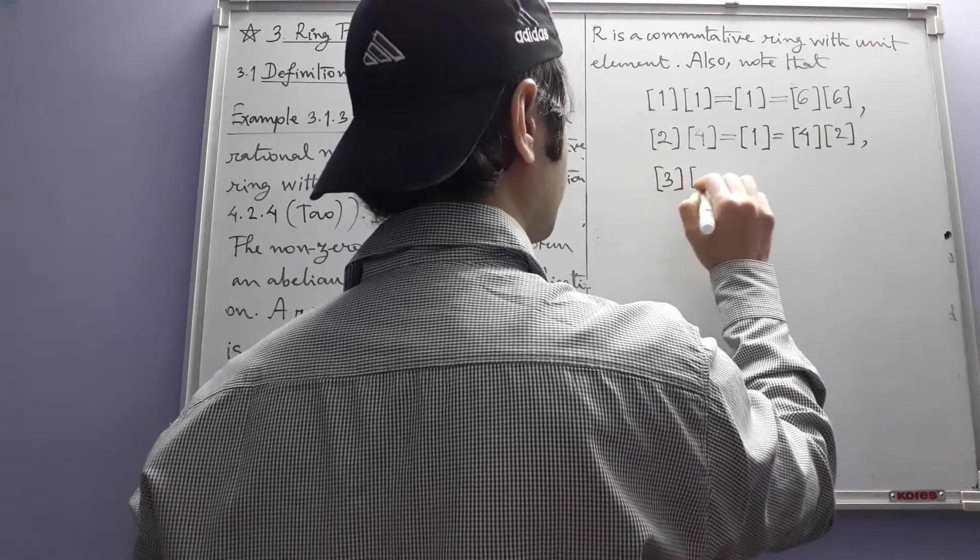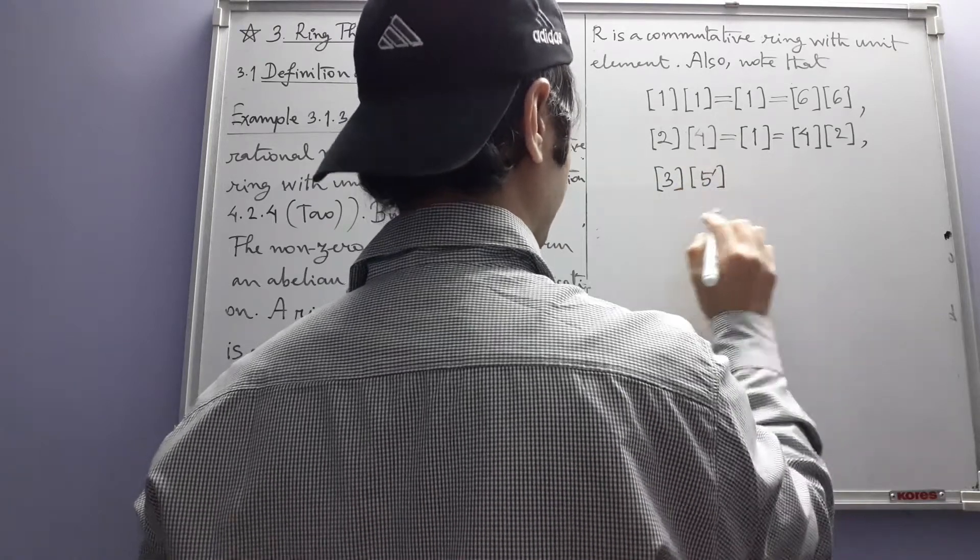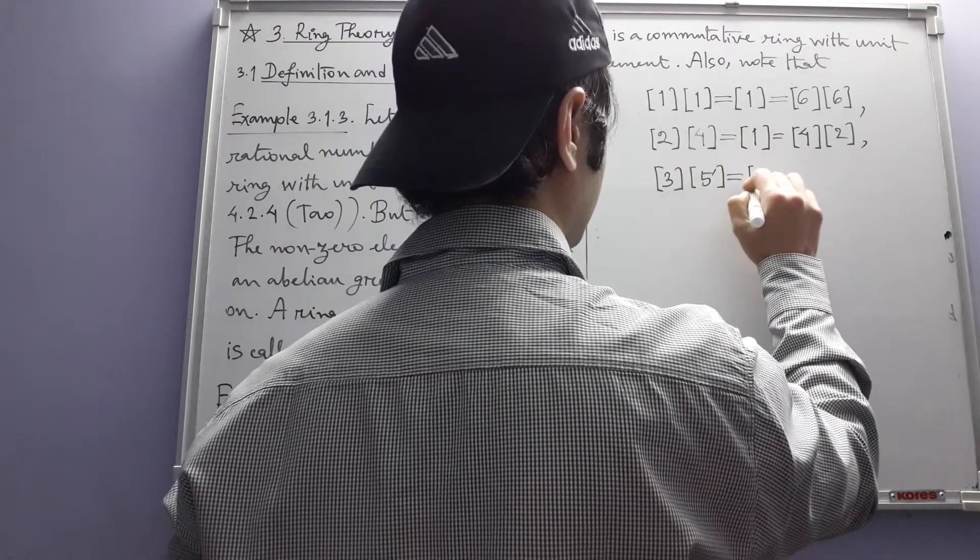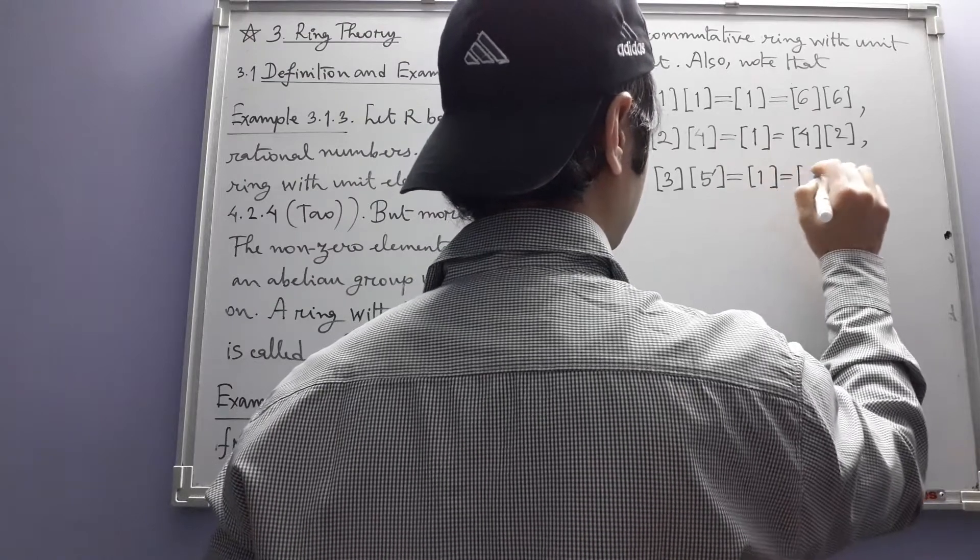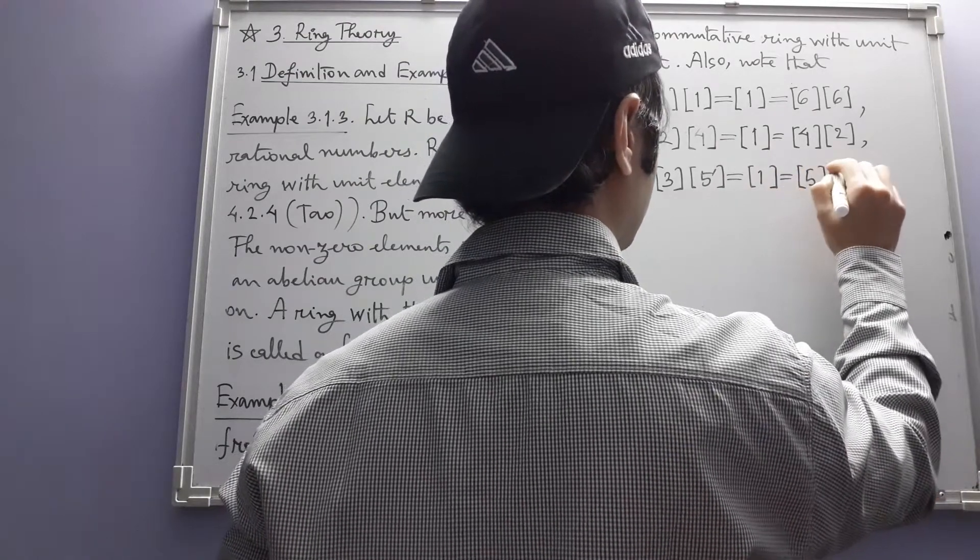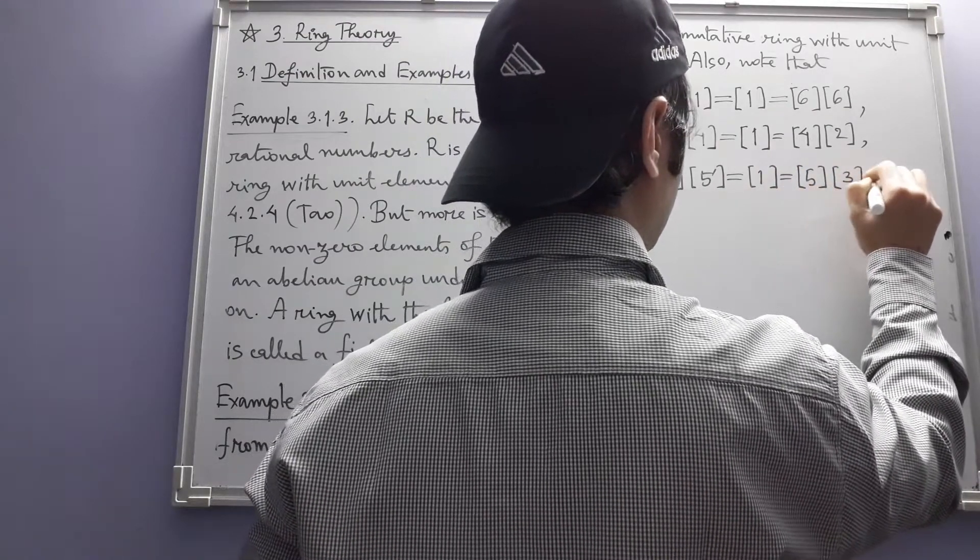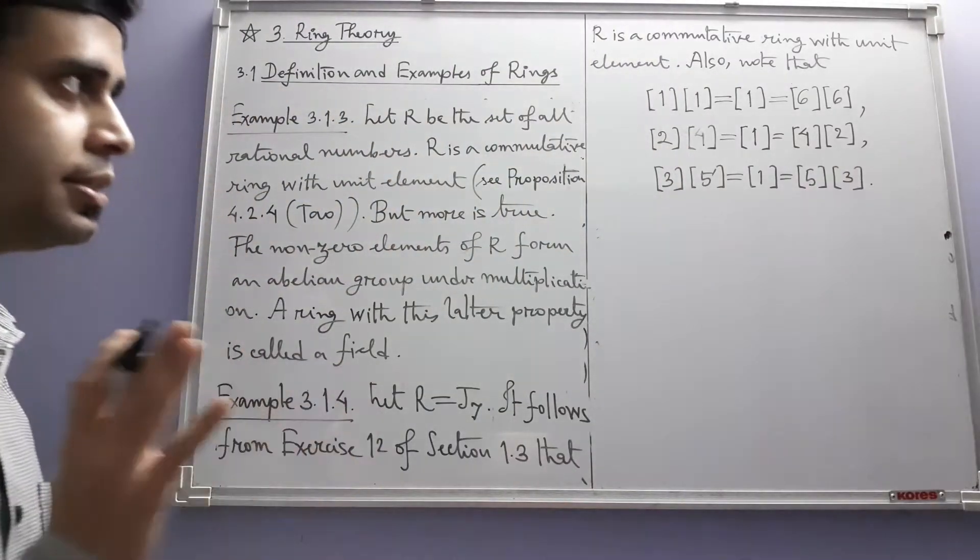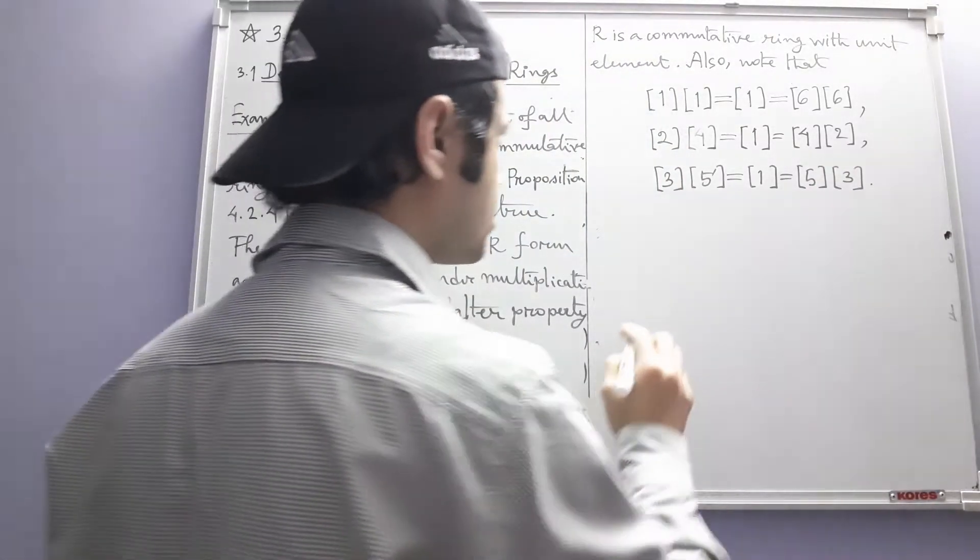The inverse of three is five and that of five is three. These equations are justified by congruences.